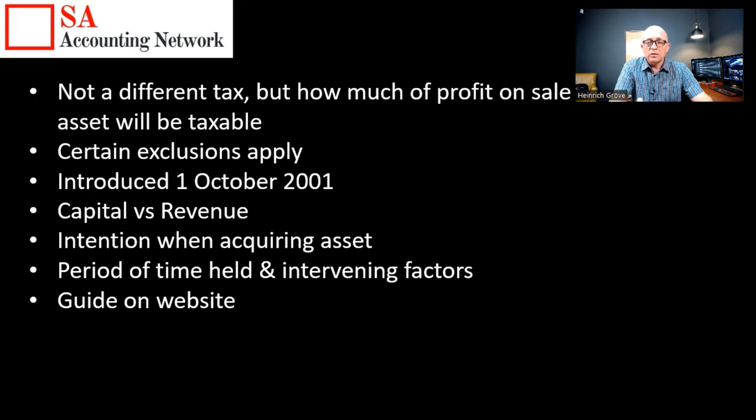Capital gains tax is not something that's been around forever — it only started in 2001. Before that, if you bought an asset for a million rand and sold it for 10 million rand, there was no tax payable on those amounts. Since 2001, the receiver of revenue has been broadening their tax base, and that's why you now need to pay tax if you make capital gains.